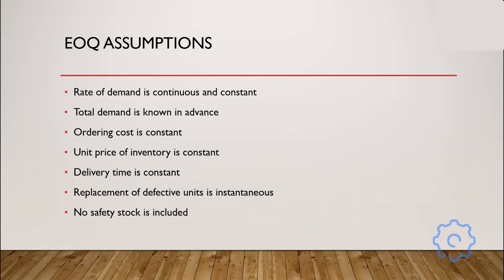EOQ also assumes that total demand is known in advance. Later in the class we'll deal with forecasting and probability to hedge forecasts, but for now we determine a demand and use it in the EOQ calculation. Ordering costs are also assumed to be constant. In the real world, ordering costs fluctuate considerably, but EOQ requires a single number. You can also create an EOQ variable with multiple ordering cost periods, though that goes beyond the scope of this class.